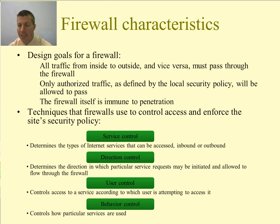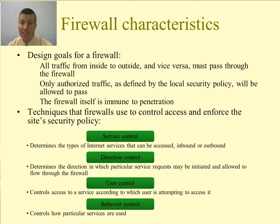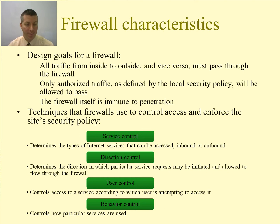Here are four techniques that firewalls use to control access and enforce security policy: service control, direction control, user control, and behavior control. Service control determines the types of internet services that can be accessed inbound or outbound. Direction control determines the direction in which particular service requests may be initiated and allowed to flow through the firewall — whether someone from the outside network can connect to a computer on the inside network. User control controls access to a service according to which user is attempting to access it, so certain users may have access to certain sites and others do not. Behavior control controls how particular services are used — for example, the firewall may filter email to eliminate spam or enable external access to only a portion of information on a local web server.